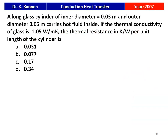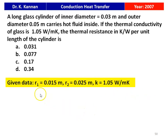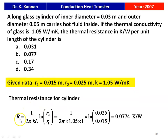The next question is from the 2007 question paper. A long glass cylinder of inner diameter 0.03 m and outer diameter 0.05 m carries hot fluid inside. Thermal conductivity of glass is 1.05 W/mK. Given R1 = 0.015 m, R2 = 0.025 m. Thermal resistance per unit length R = ln(R2/R1)/(2πKL) = ln(0.025/0.015)/(2π×1.05×1) = 0.0774 K/W. The answer is 0.077 K/W, option B.